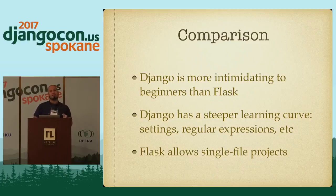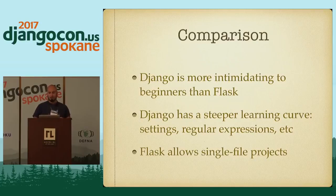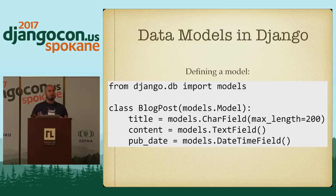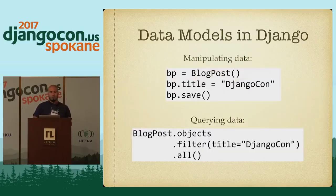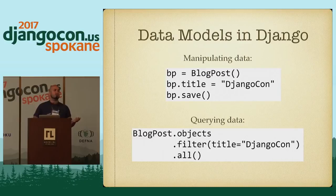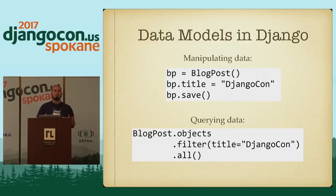But projects are generally more complicated than Hello World. Typically you want to store some data in a database, modify it, and render that data on the front end. So how do you do data modeling? Let's start with Django this time. In Django, we're going to use the Django ORM. So you do from Django DB import models, and here I'm defining a very basic blog post model. To manipulate the data, you just create an instance of it, assign information on properties, and do object.save. And then you can query the database by doing blogpost.objects, and you can do filters and selects and all sorts of standard database querying things.